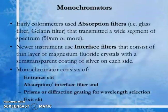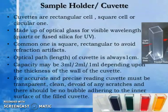Early monochromators used absorption filters such as glass filters and gelatin filters that transmitted a wide segment of the spectrum. Newer instruments use interference filters consisting of a thin layer of magnesium fluoride crystal with a semi-transparent coating of silver on each side. A monochromator consists of an entrance slit, absorption or interference filter, and a prism or diffraction grating for wavelength selection, plus exit slits.